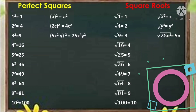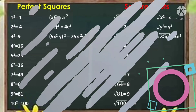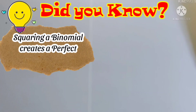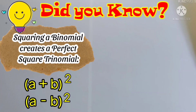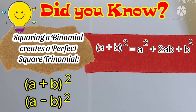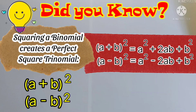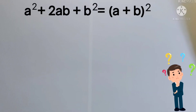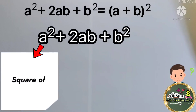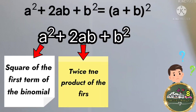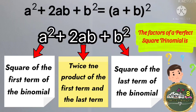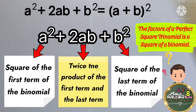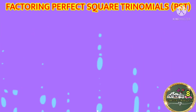As you recall, we have perfect squares and square roots. Did you know that squaring a binomial creates a perfect square trinomial? Look at these examples. Observe this illustration very carefully: a squared plus 2ab plus b squared is equal to the square of (a plus b). Keep in mind that the factors of a perfect square trinomial is the square of a binomial.